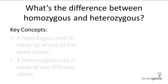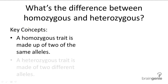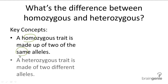The terms homozygous and heterozygous both describe the genotype of a trait. A homozygous trait has a genotype with two of the same alleles — homo meaning same. A heterozygous trait is made of a genotype with two different alleles — hetero meaning different.